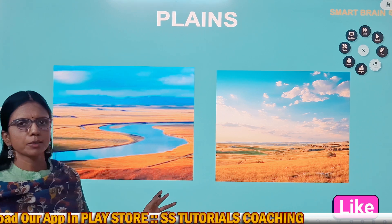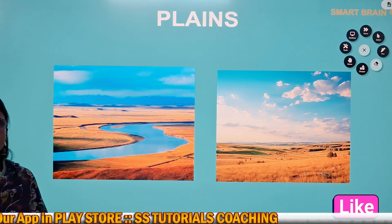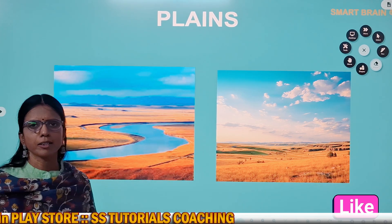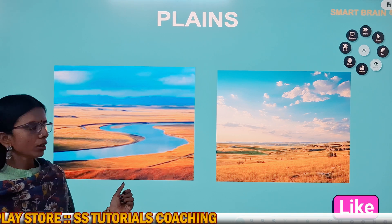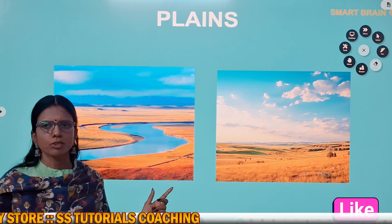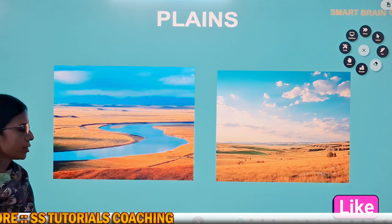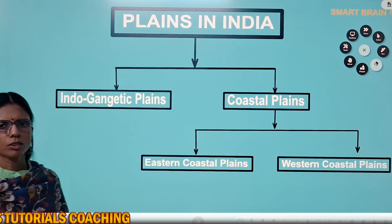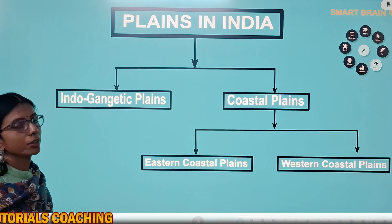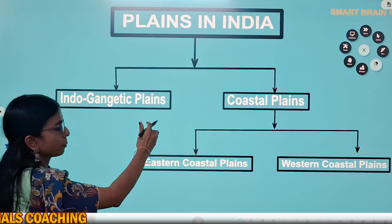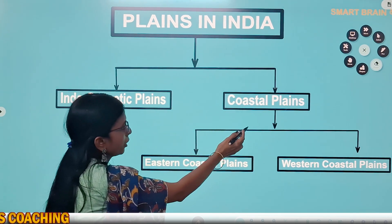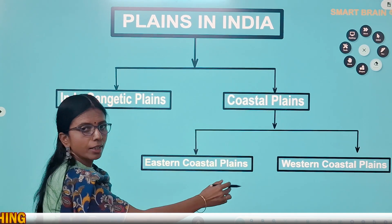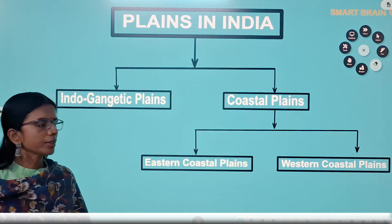Now let us see the other landform: plains. Plains are flat and low lands — not very highlands like mountains and plateaus. These are formed by the deposition of silt by great rivers. The plains in India are divided into two types: Indo-Gangetic plains and coastal plains. The coastal plains are further divided into eastern coastal plains and western coastal plains.